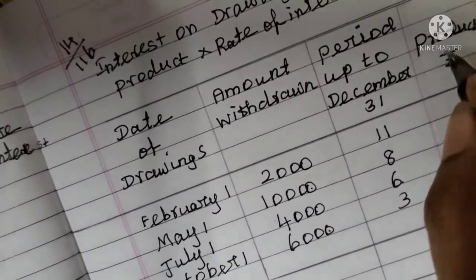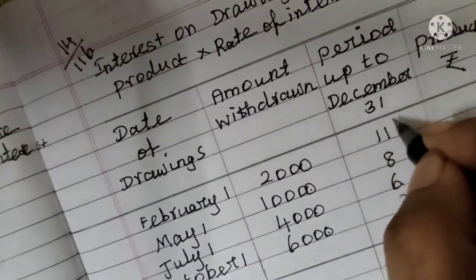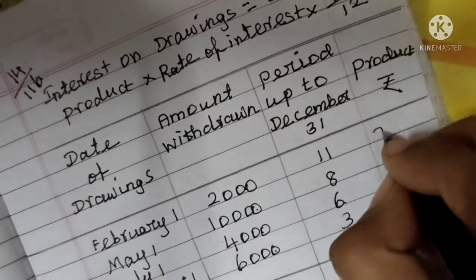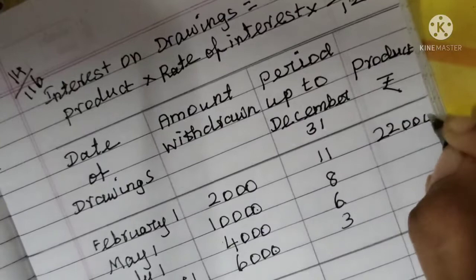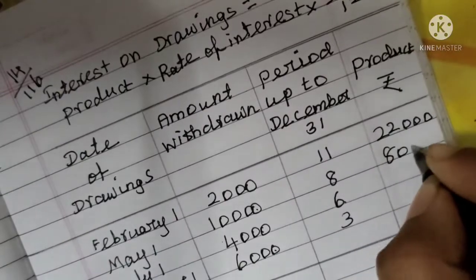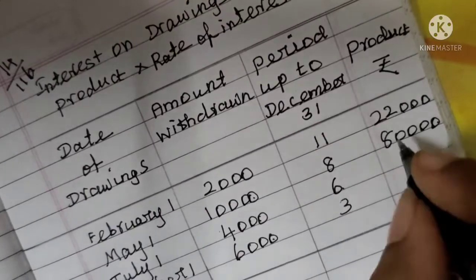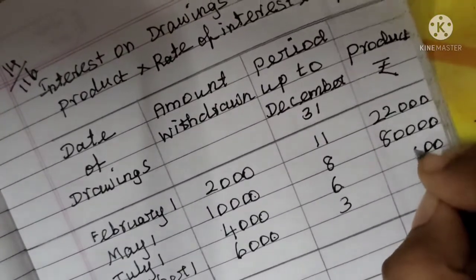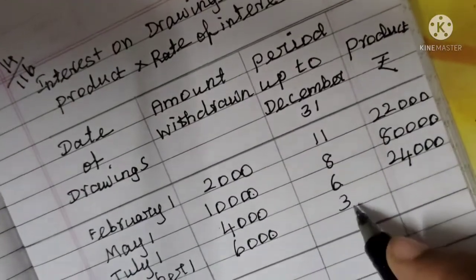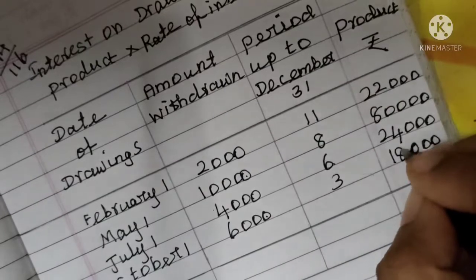Now calculate the product by multiplying the amount of withdrawals by the period: 2,000 × 11 = 22,000; 10,000 × 8 = 80,000; 4,000 × 6 = 24,000; 6,000 × 3 = 18,000. Total sum of products = 1,44,000.